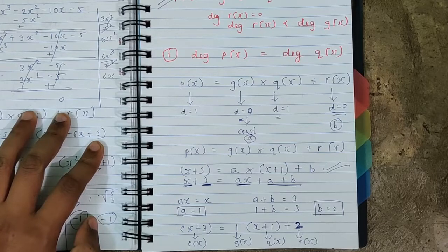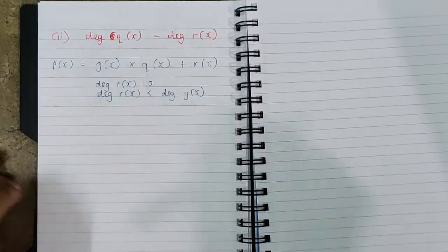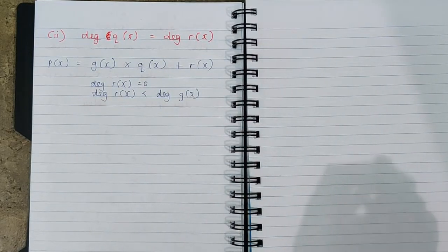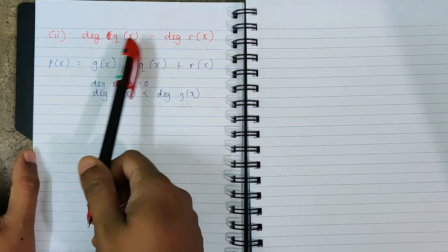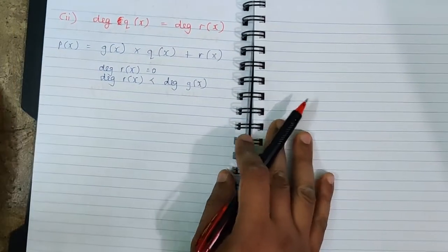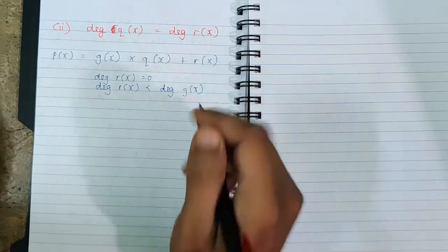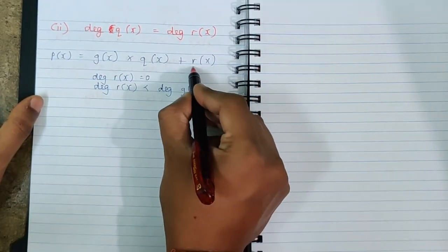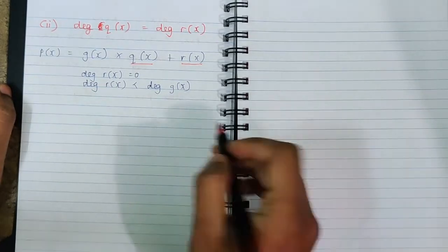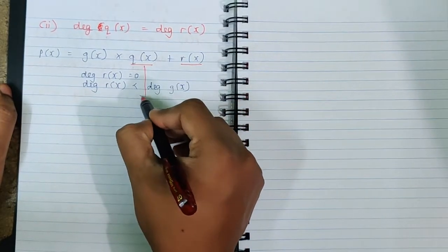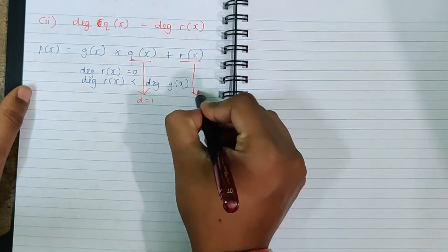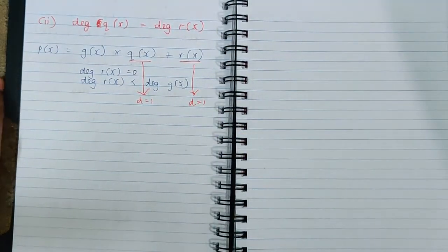The second example: find all four polynomials where degree of q(x) equals degree of r(x). We have the division algorithm and rules written. Let us suppose degree of q(x) = 1 and degree of r(x) = 1, since we want them equal.